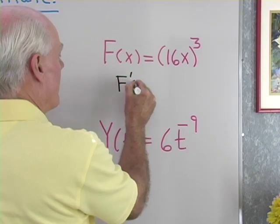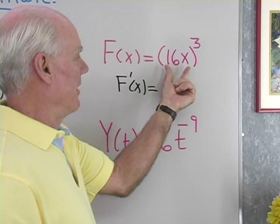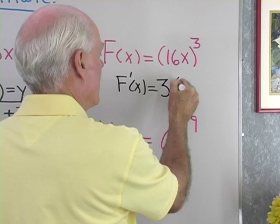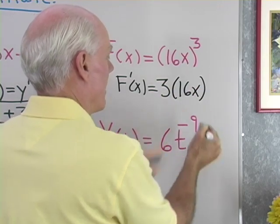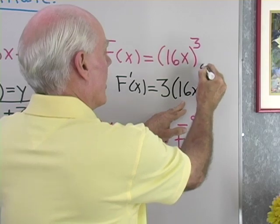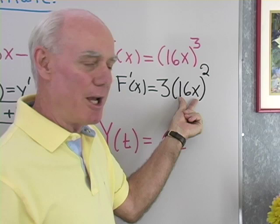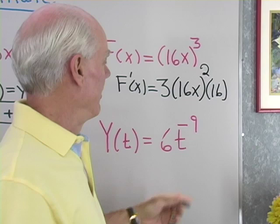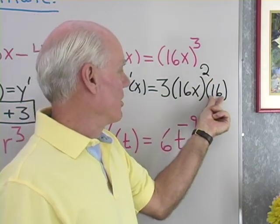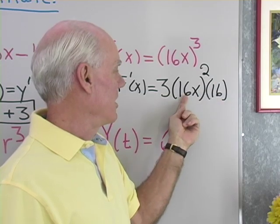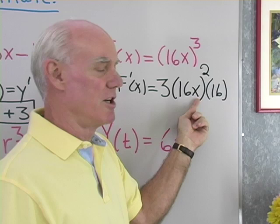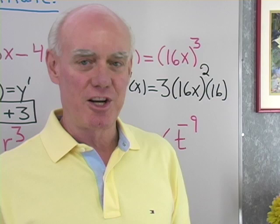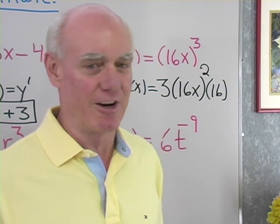I'll have F prime of x is equal to... Okay, I have some function of x to the third power, so it's 3 times 16x, that's that base, to a power 1 less, squared, and then I have to differentiate the base, in which case I get 16. So I have 3 times (16x) quantity squared times 16, so I have 16 times 16 squared, 16 to the third times 3 times x squared, if I want to simplify that. But right now what I want to do is just take you through and let you look at the derivatives. We don't have to simplify that one.